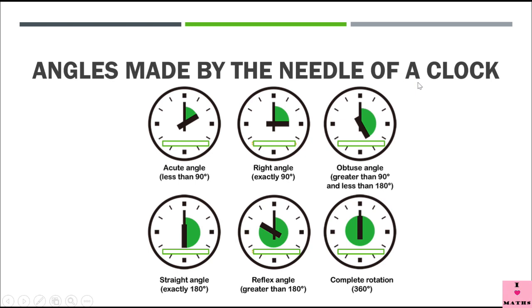Now the angle made by the needle of a clock. When the time is 2 o'clock, this angle is an acute angle since it is less than 90 degrees. In this clock, the time is 3 o'clock and this angle is exactly 90 degrees, and that's why this is a right angle. In this clock, the time is 5 o'clock and the angle formed by the two needles is an obtuse angle since it is greater than 90 degrees and less than 180 degrees.